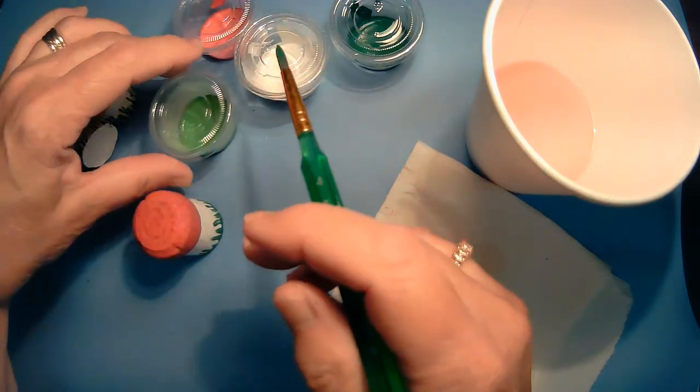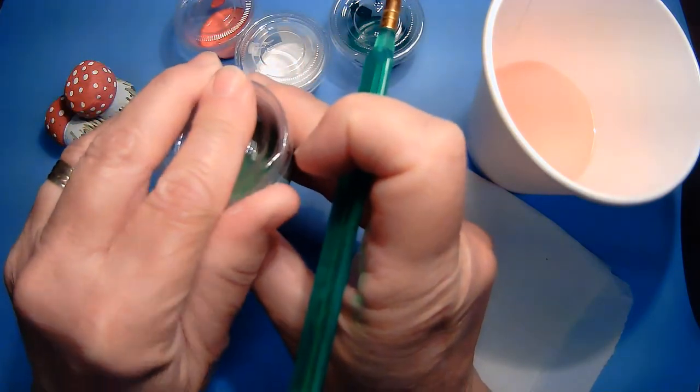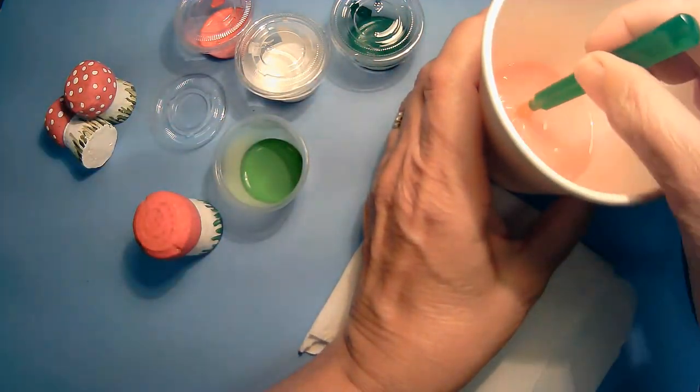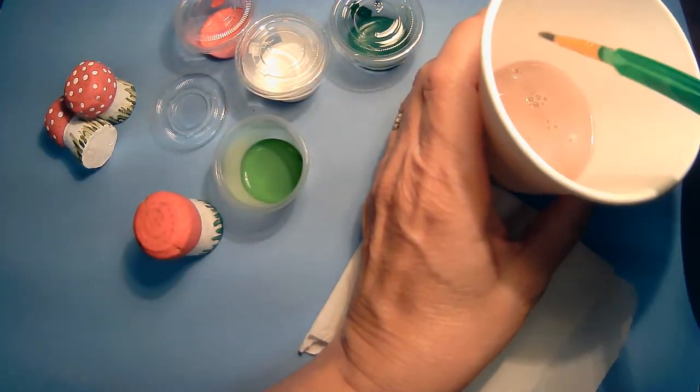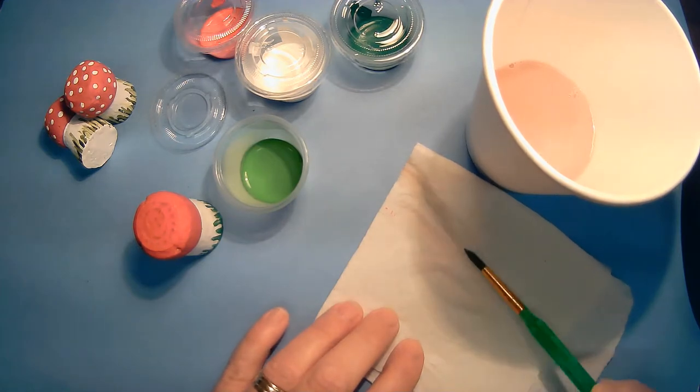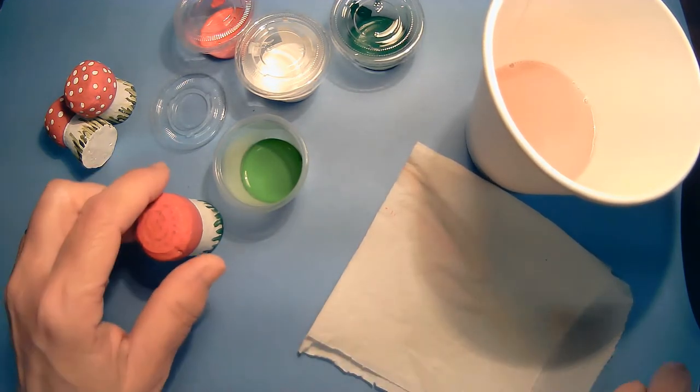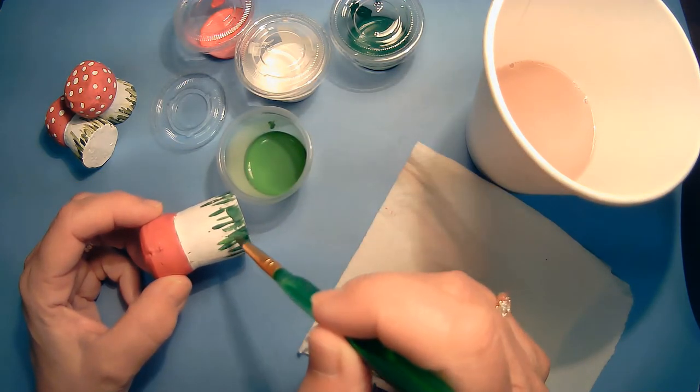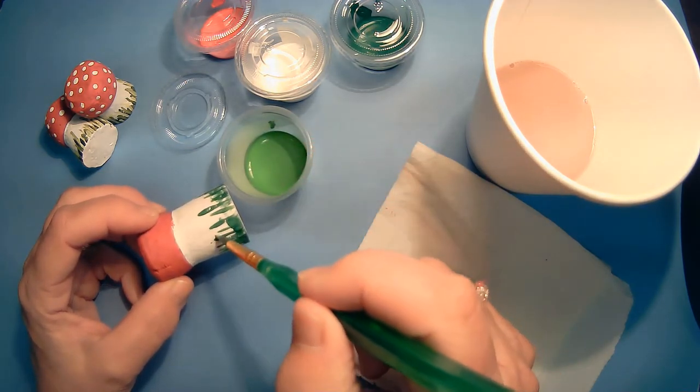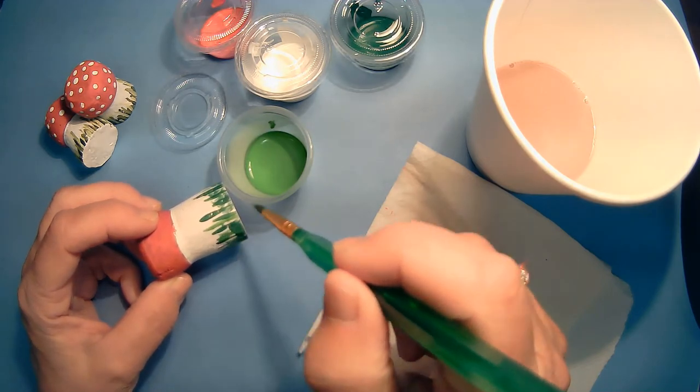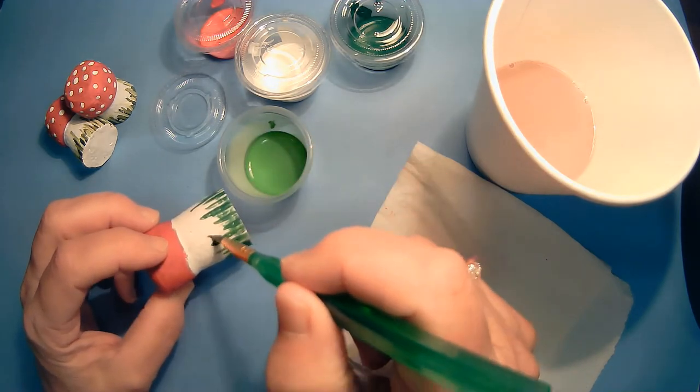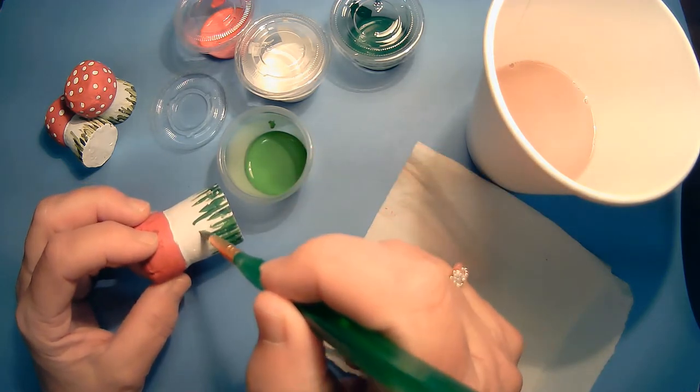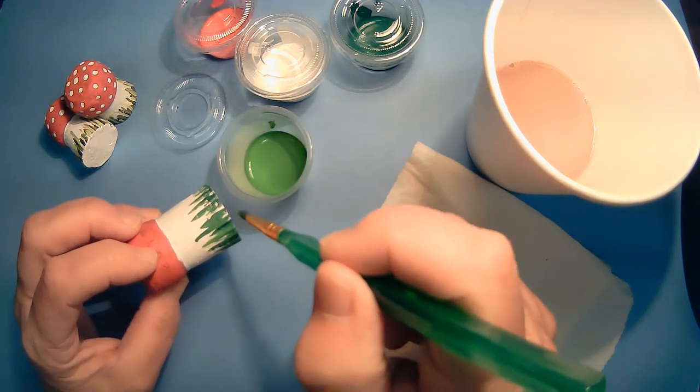And then we don't have to wait for that to dry. We are going to add the lighter color green. I think I want to clean the brush though. So clean the brush in the water and then just dry it off on my paper towel. And then we'll add the lighter green. And then random places with a lighter. And you can have tall and short strands of green.